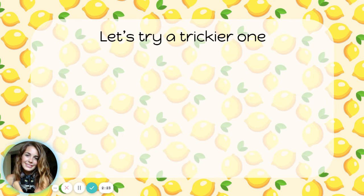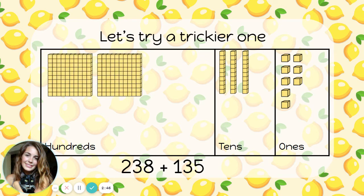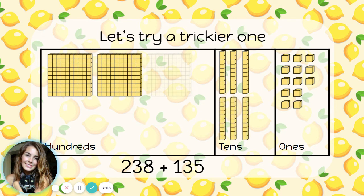Let's try a trickier one. This time I'm adding 238 plus 135. Once again, I'm going to set up a place to keep track of all my hundreds, tens, and ones. I'm going to start by making the first number, 238. That's eight ones, three tens, and 200. Now I'm going to add the second number, 135. 135 has five ones, so I need to add five more ones. It has three tens and another hundred.